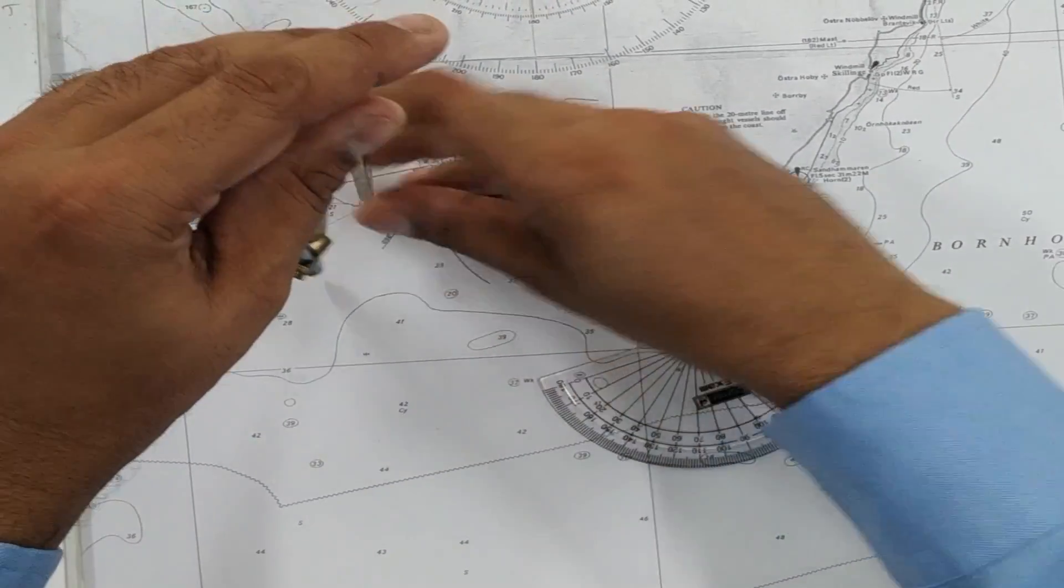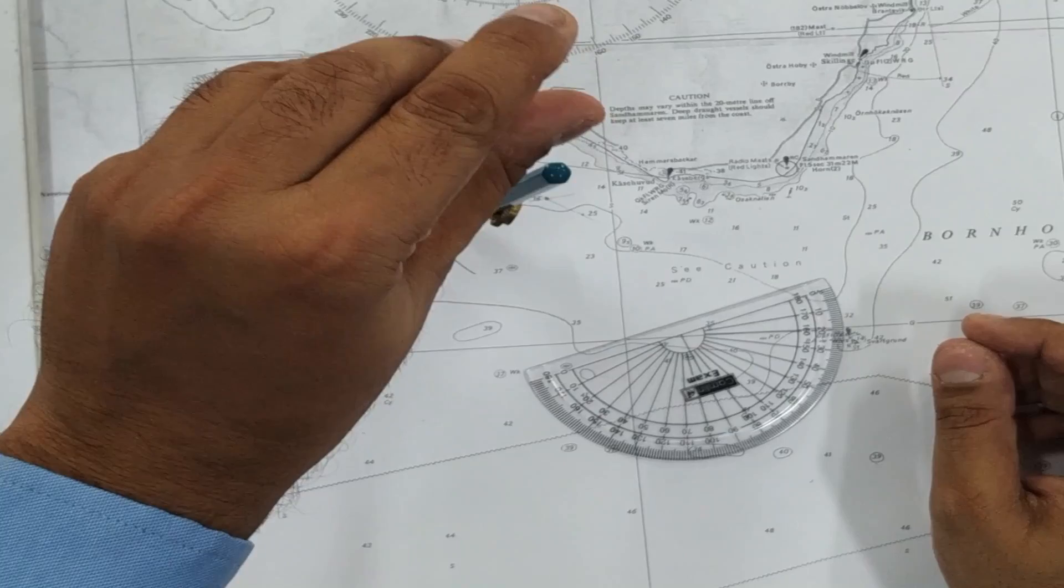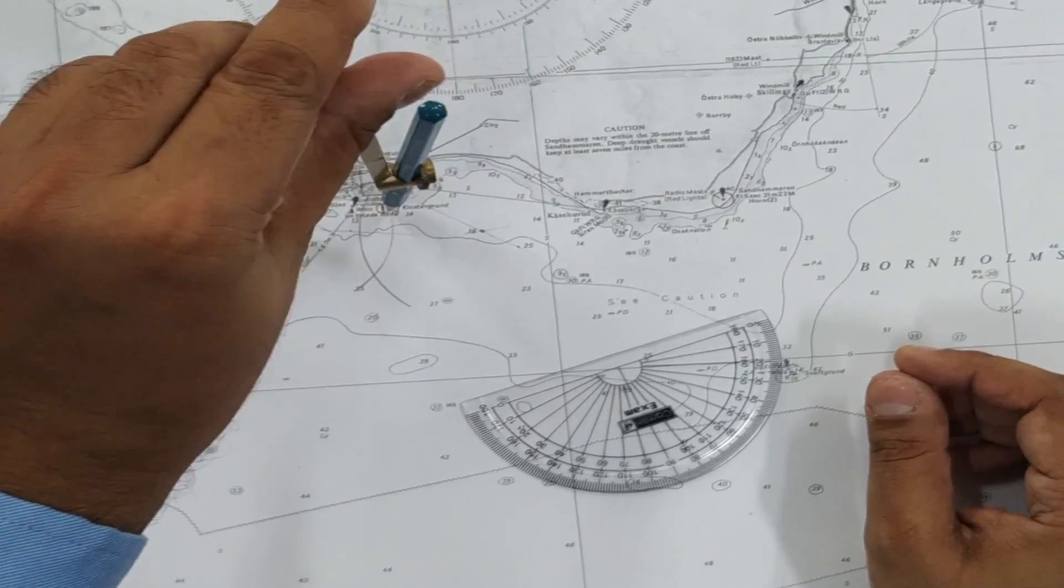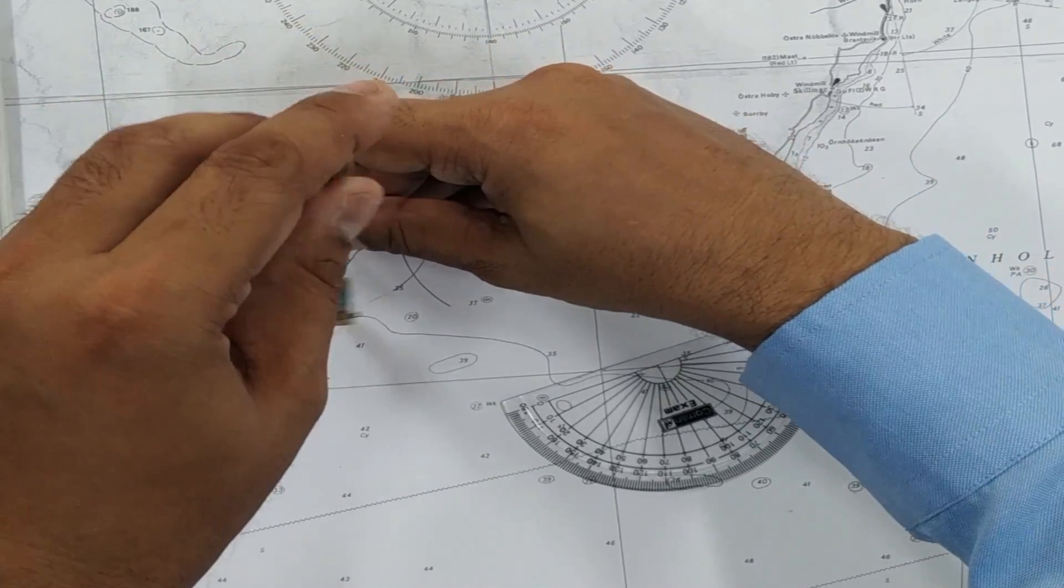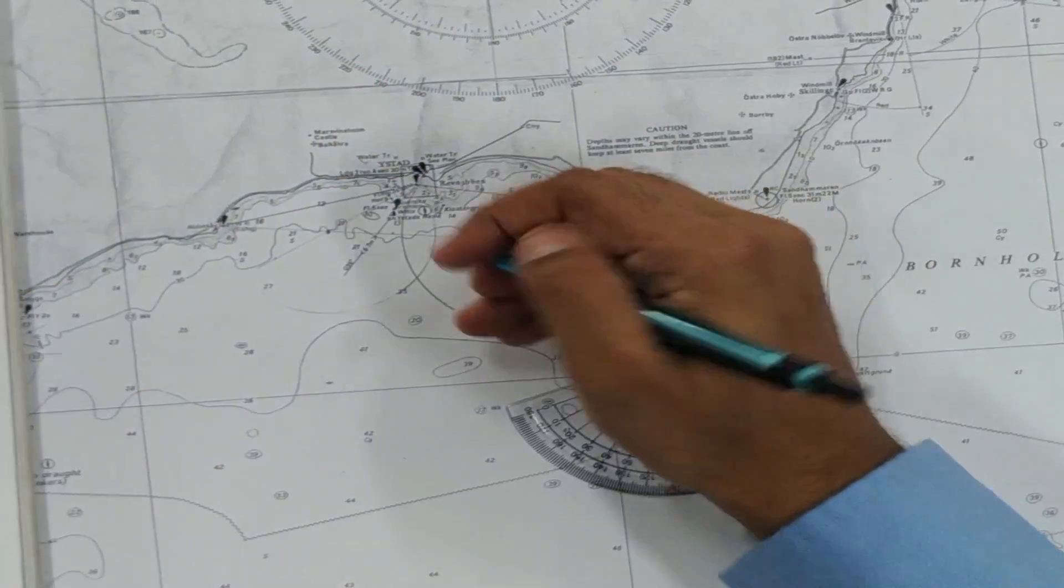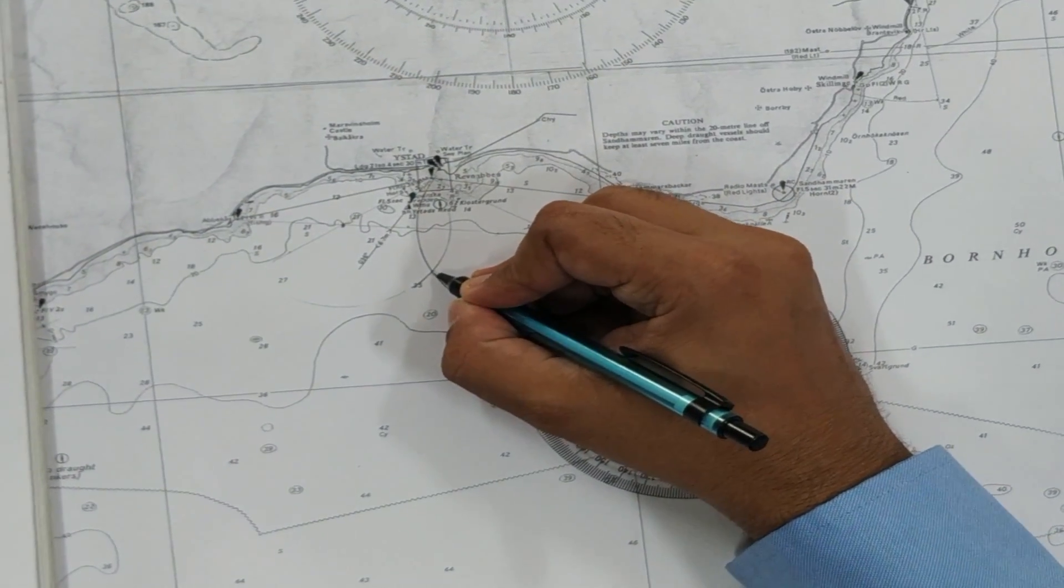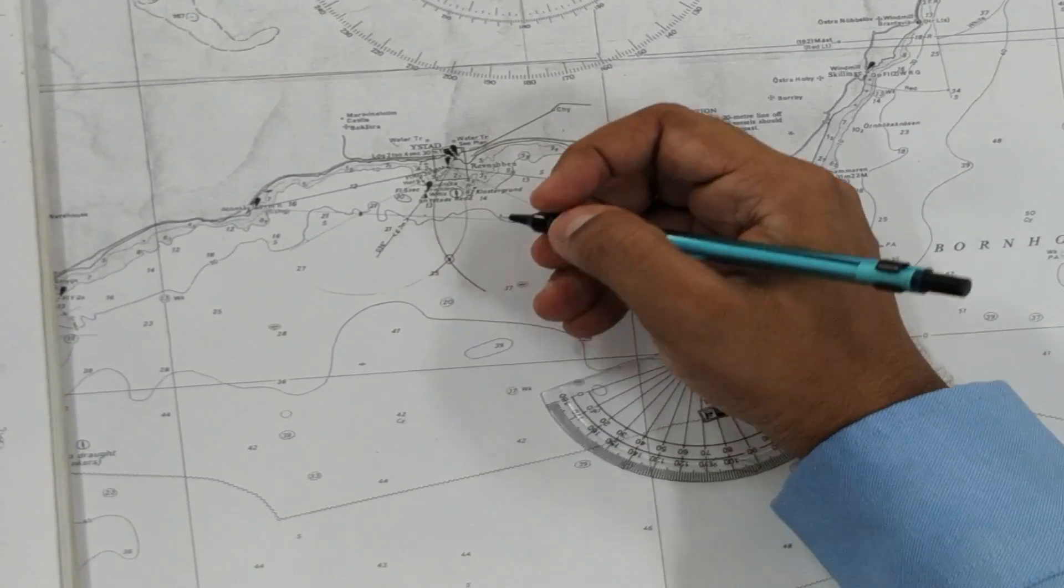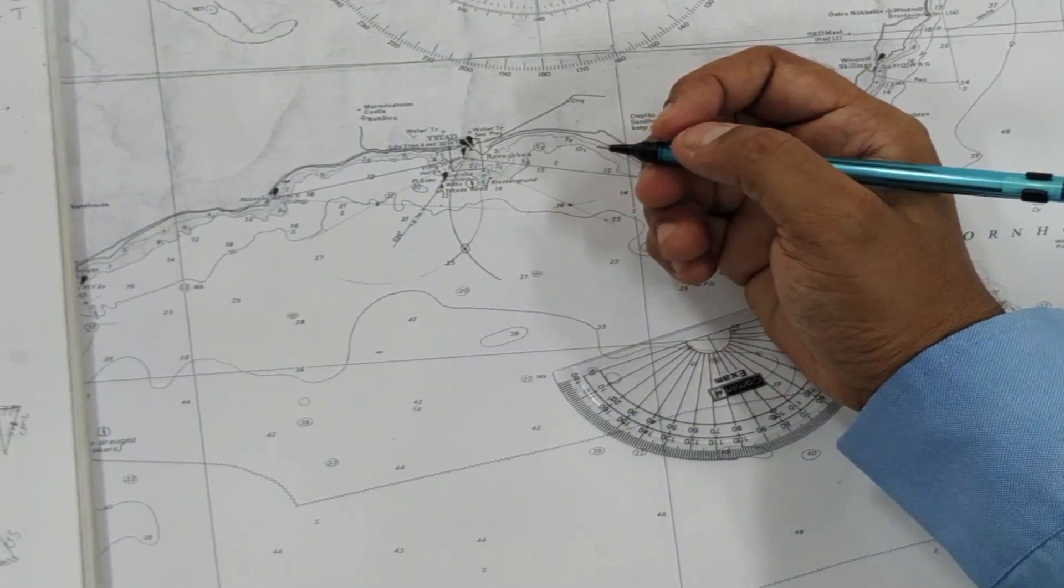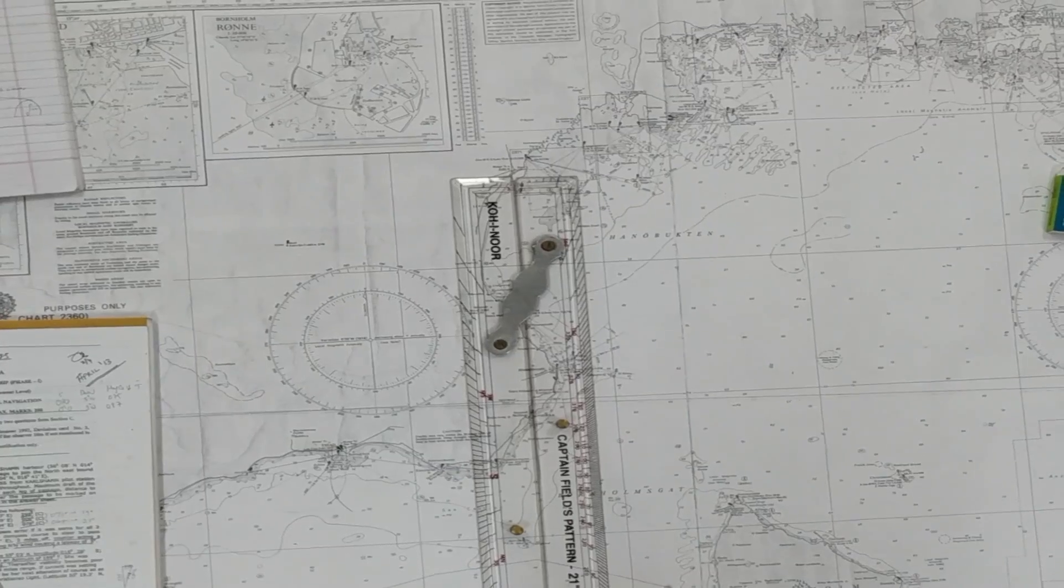And then from this point, using this as your baseline, we draw another circle. You can draw it fully, but all what we want is the circles where they intersect. This position, this is the true fix of the ship.